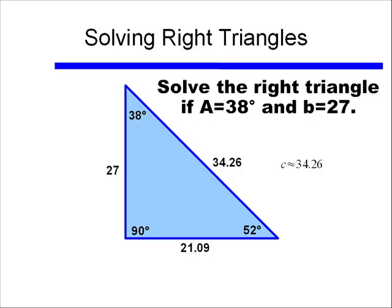And we can stop and make sure this makes sense. That hypotenuse length should be longer than each of the legs, and we see that 34 is in fact greater than 27 and is greater than 21. So this looks like it's correct. We could also check our work by using the Pythagorean theorem to see if 27 squared plus 21 squared was approximately equal to 34 squared.